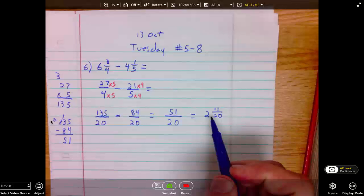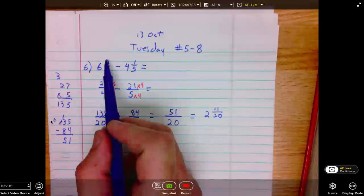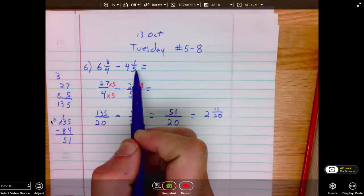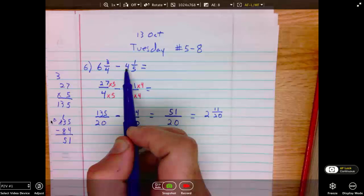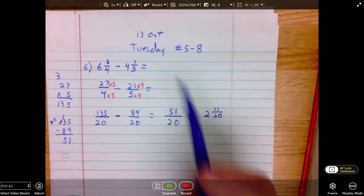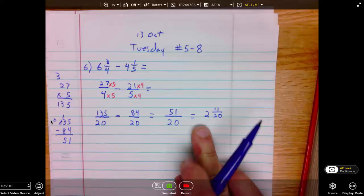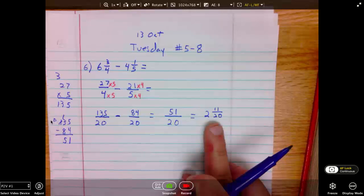51 over 20 is equal to 2 and 11 over 20. Lastly, we need to check for reasonableness. Well, neglecting the fractional parts, the subtraction we have here is 6 minus 4. 6 minus 4 is 2. So, 2 and 11 over 20 is certainly a reasonable answer.